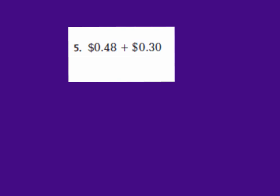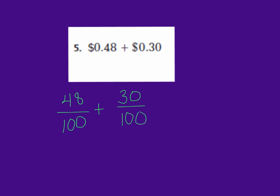Let's jump down to number 5. Number 5 is a little bit different — it's in money form. We have 48 cents plus 30 cents. The way that we're going to approach this is by changing it into fraction form. So if we have 48 cents, that is equivalent to 48 hundredths — 48 cents out of 100. And we can add our 30 cents, which is equivalent to 30 hundredths. Now we have our money in fraction form.